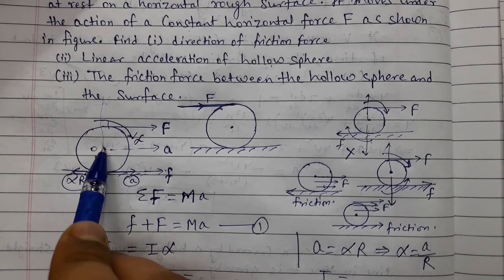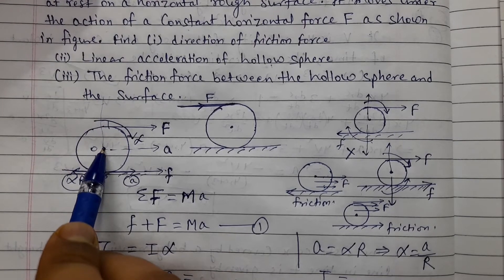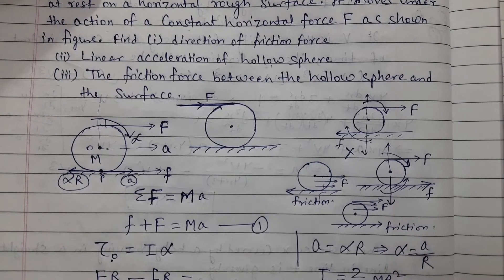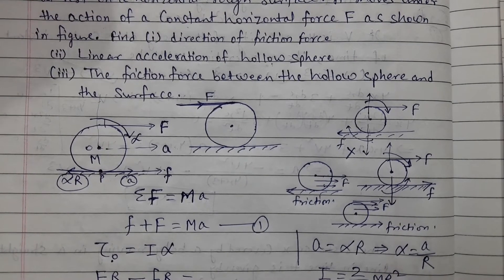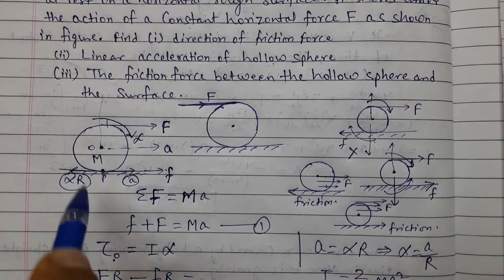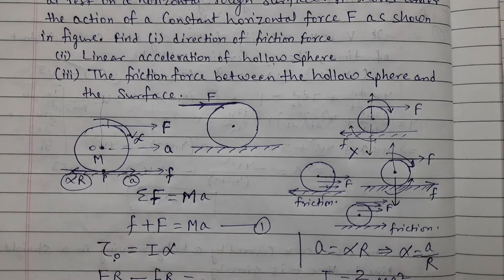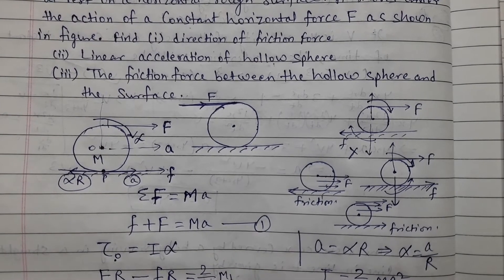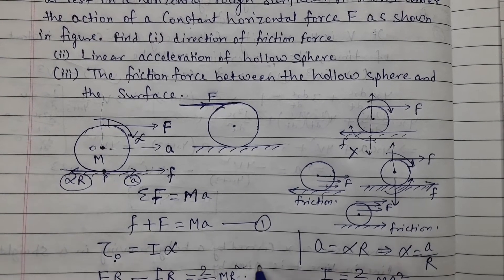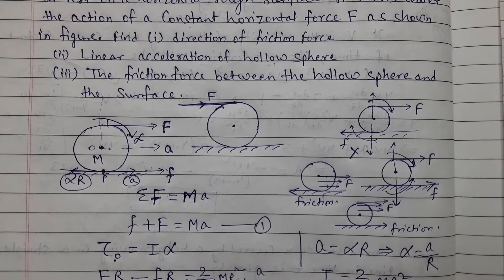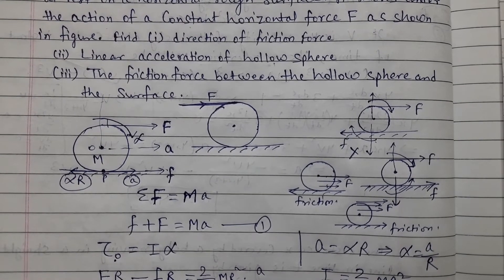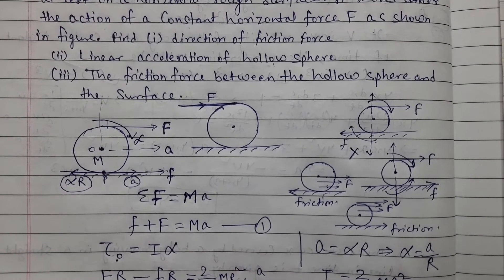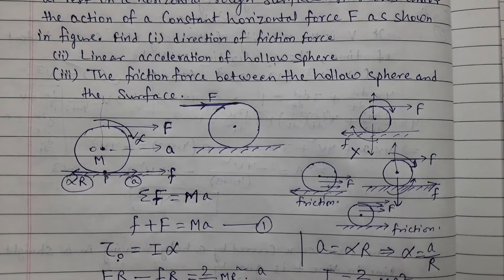The axis of rotation is the center of mass of the hollow sphere. The moment of inertia of a hollow sphere about the center of mass is 2/3 MR². So we have F·R minus f·R = (2/3)MR² × alpha. Since alpha = a/R, substituting and simplifying, R²/R² cancels, giving us: F minus f = (2/3)Ma. This is Equation 2.